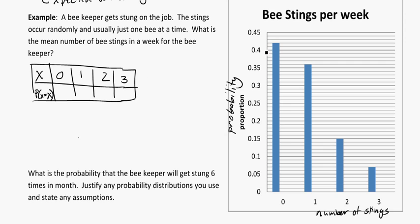For zero stings, that's 0.42. For one, reading it off the graph, we see that it's 0.36. And for two, 0.15. And for three, 0.07. One thing that you can keep in the back of your head is that those are all supposed to add up to one. They should all add up to one for all the total possibilities.